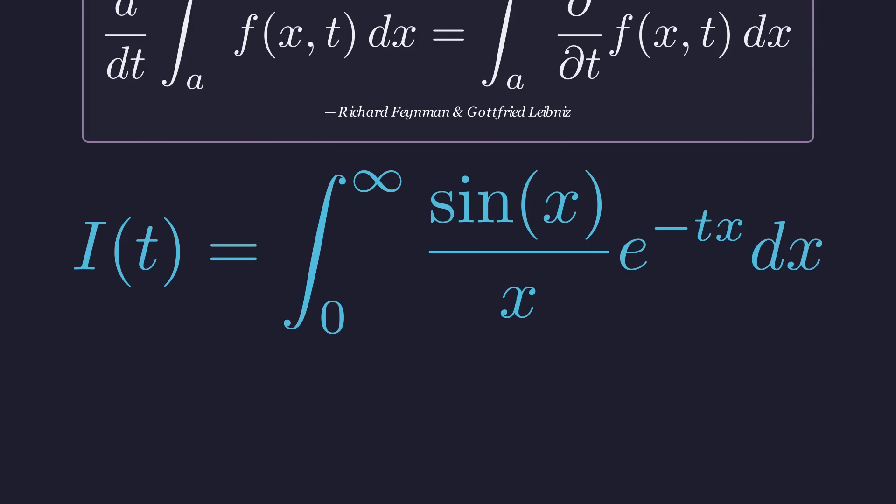Let's define a function, I of t, by introducing an exponential term, e to the power of negative t times x, into our integral. Notice that if we set t to zero, we get back our original problem.